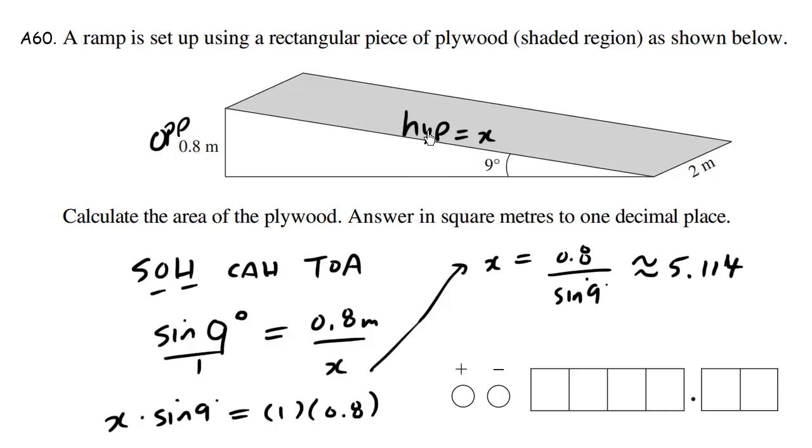So this value here is 5.144. So I'll just write this in here. 5.114 approximately. The area is going to be this number times 2. So doubling it, we get 10.2 approximately. 10.2.